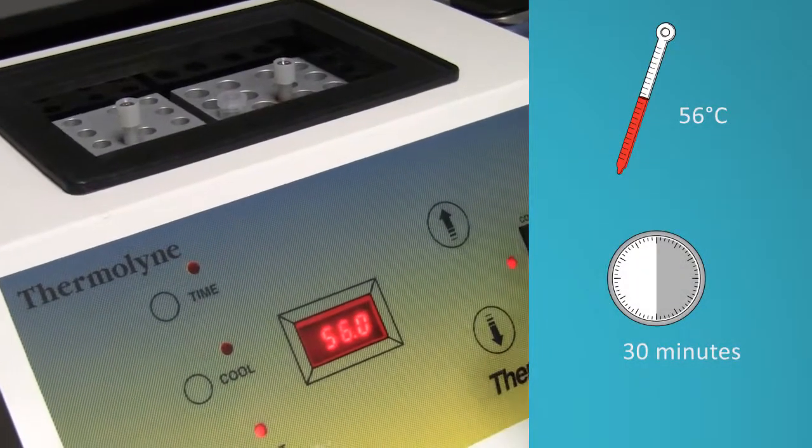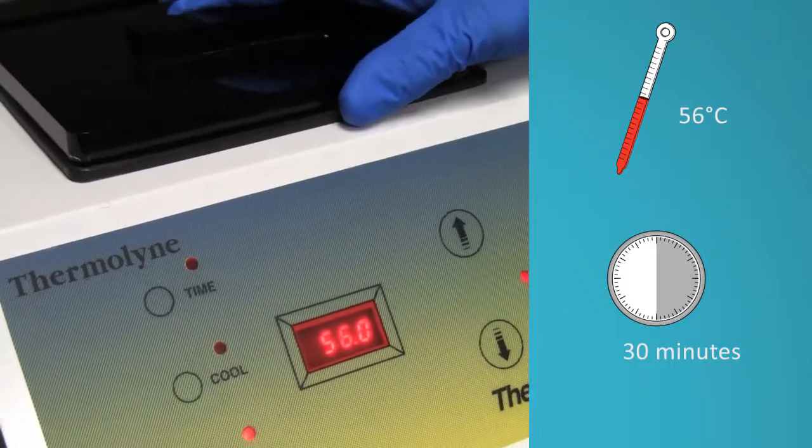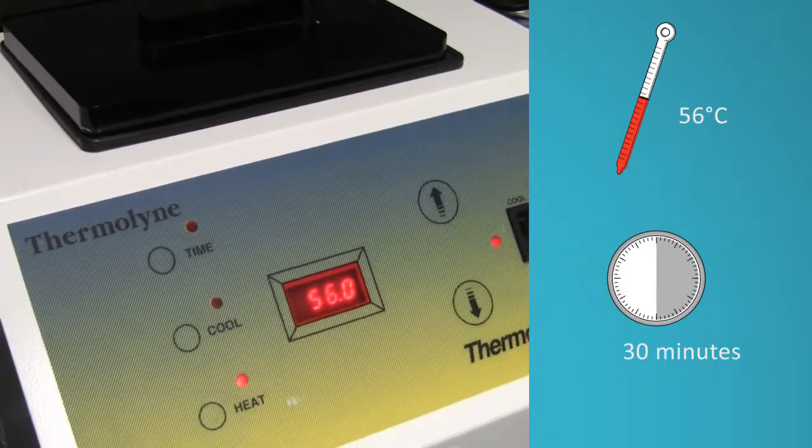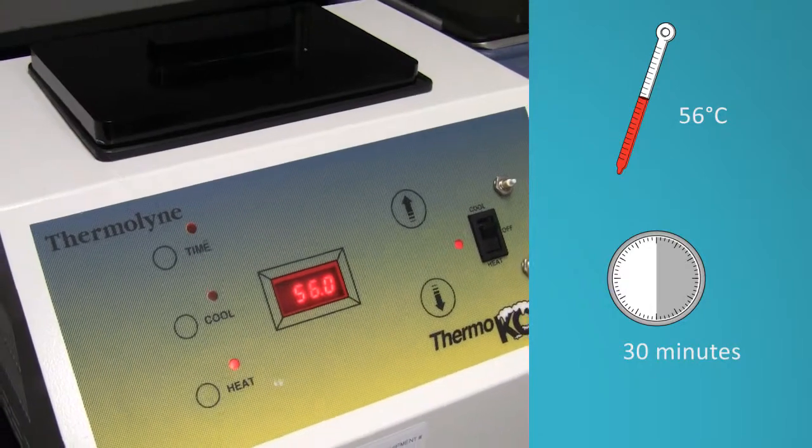Transfer the sample tubes to a 56 degree heat block and incubate for 30 minutes to allow proteinase K to digest the protein.